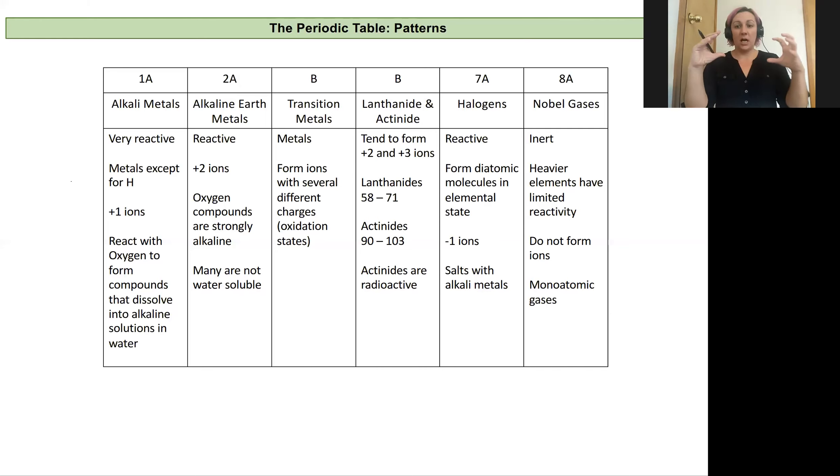Then we have a big block of our transition metals. These have different charges associated with them. So each element can oftentimes form multiple different charges or what we call oxidation states. And we'll get into that chemistry, which is rich and fascinating, in one of our later classes at the end of the year. Now the lanthanide and actinides tend to form plus two and plus three charges. And the actinides within those are radioactive. And so those are all of our metals and our metals are all going to form positive charges.